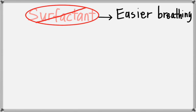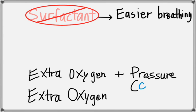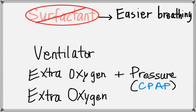There are ways to support breathing in the NICU. The baby can receive extra oxygen through the nose. If the baby's lungs need more help, the baby can receive extra oxygen and pressure through the nose called CPAP. If the baby needs more help, a ventilator machine can be used to work as the baby's lungs.